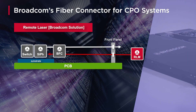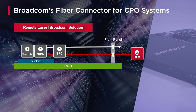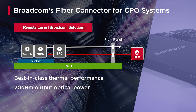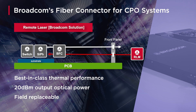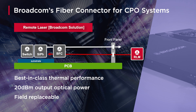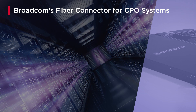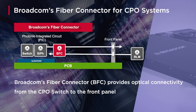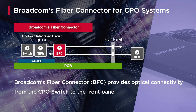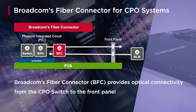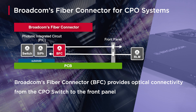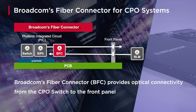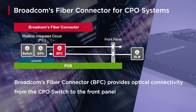Last time we talked about Broadcom's RLMs — remote laser modules that provide best-in-class thermal performance with 20 dBm of optical output power and field replaceability. RLMs provide the laser light from the front panel through fiber and into Broadcom's fiber connector, connecting light into the silicon photonics modulator. The same BFC then takes the modulated light output from the PIC back to the front panel, as shown in the diagram.